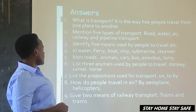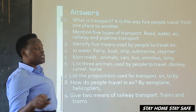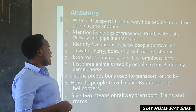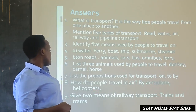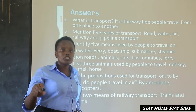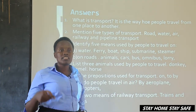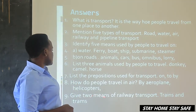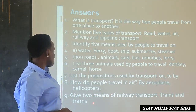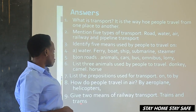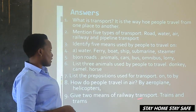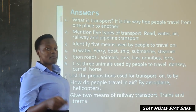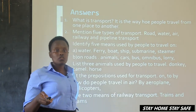How do people travel in air? Means of air transport — there are very many. For example, aeroplanes, helicopters, hot air balloons, and others. Lastly, two means of railway transport: we have trains and trams.